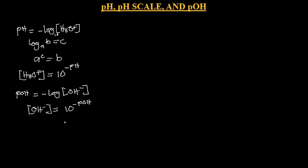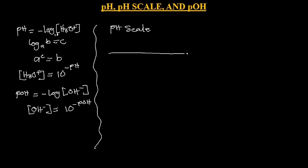Now we have what is known as the pH scale. The pH scale expresses the degree of acidity or alkalinity of a solution. Usually it is represented with a line, and at the center of it, it usually refers to 7. pH ranges from negative values all the way to 14, but usually on the scale we show from 0 to 14.